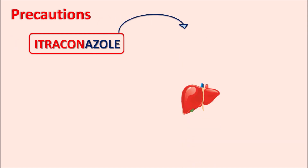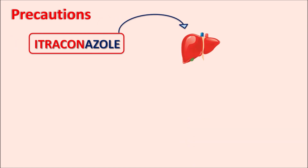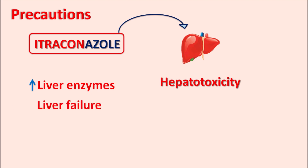Itraconazole can also affect the liver and produce hepatotoxicity. This drug can elevate liver enzymes — SGPT as well as SGOT levels are increased within the serum — and it can also produce liver failure and even death in patients. Though this hepatotoxicity is rare, care should be taken to monitor any liver abnormality in patients.